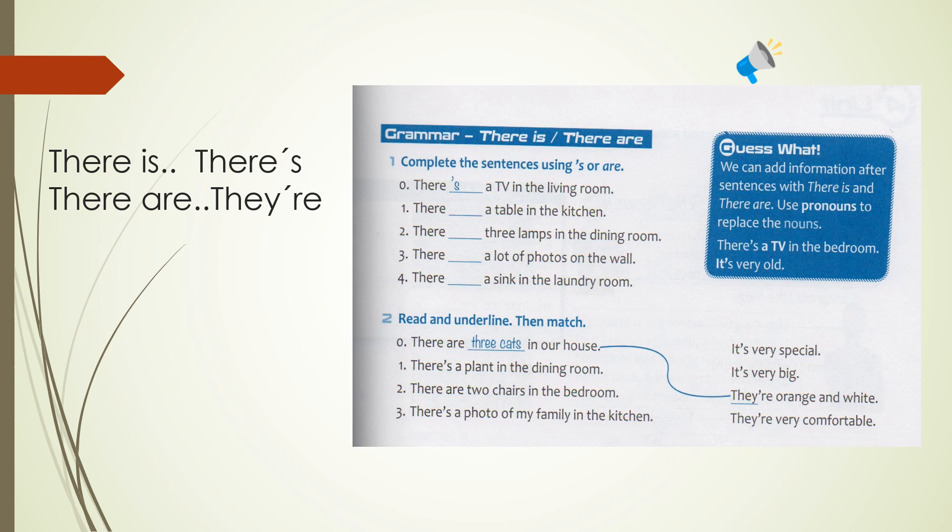Nos regresamos acá al ejercicio 1. Ya habiendo leído la información del cuadrito azul de la gramática, el ejercicio 1 dice, complete sentences using there is o there are. Number 0, there is a TV in the living room. Hay un televisor en la sala. Number 1, there, a table in the kitchen. ¿Cómo voy a saber si lo que voy a escribir allí es is o are? Cuando dice a table, esa A me da la pauta que está hablando de una, una mesa. Entonces voy a usar la forma singular is.